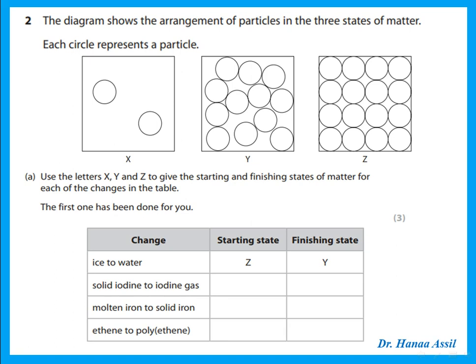The diagram shows the arrangement of particles in three states of matter — x, y, and z. X has particles that are far apart, so x represents gas. Y has particles that are irregularly or randomly arranged but near to each other — this is liquid. Z has particles in regular rows, closely packed, so z is the solid.